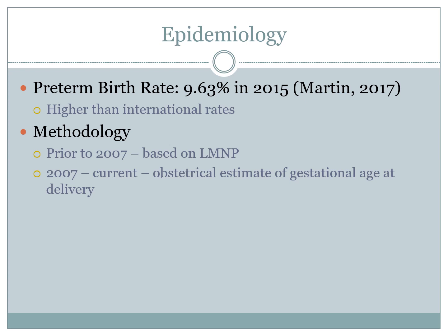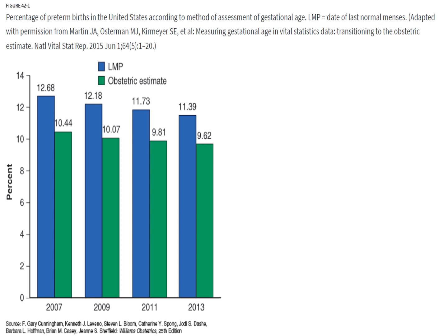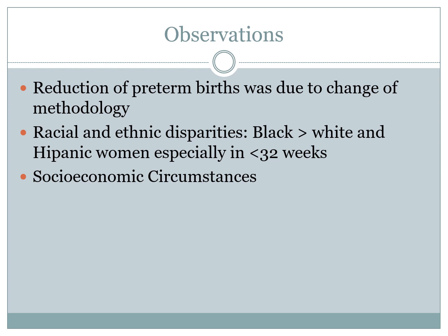This is higher than international rates, primarily because of methodology. Prior to 2007, it is based on last menses; from 2007 to current, it's the obstetrical estimate of gestational age at delivery. The blue line represents menses-based estimates and the green represents the obstetric estimate, showing a large difference from 2007, 2009, 2011, and 2013. The reduction of preterm births was due to change of methodology. Racial and ethnic disparities were also considered, since preterm delivery occurred more in Black women than White and Hispanic women, especially in preterm births less than 32 weeks, attributed to socioeconomic circumstances.